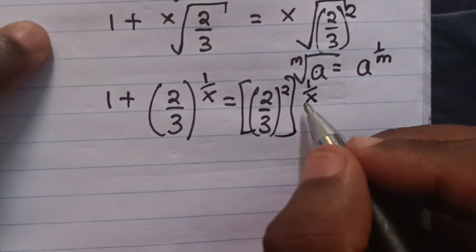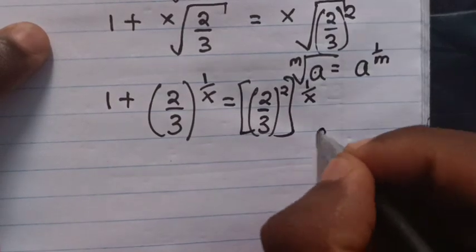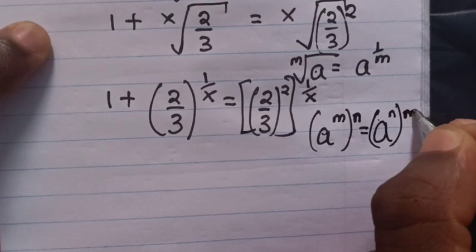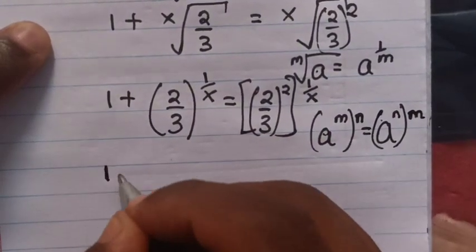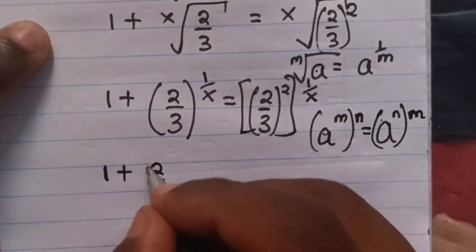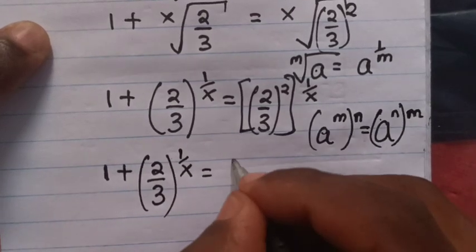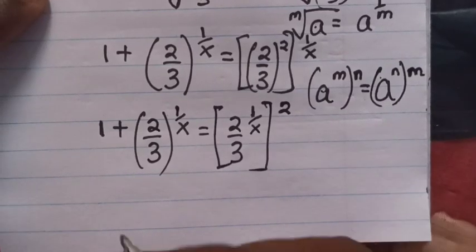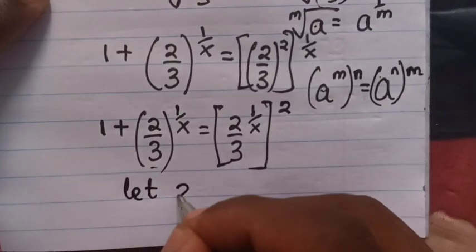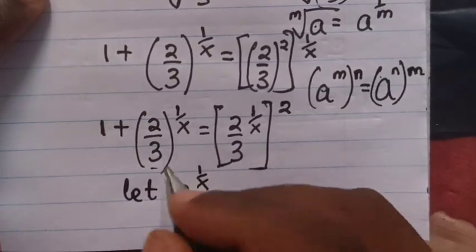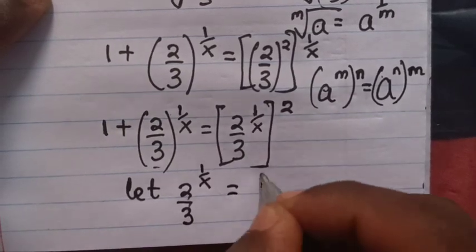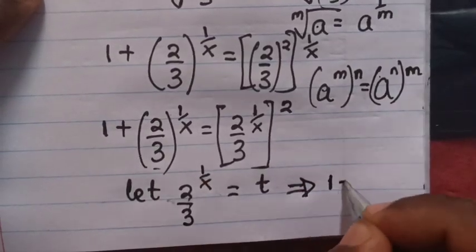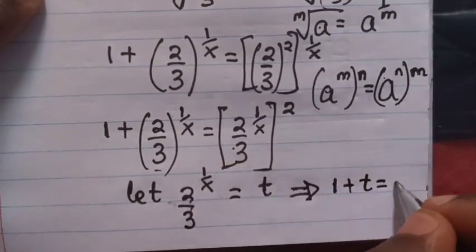From the right side of the equation, we apply the rule that the m-th root of x equals (2/3)^(1/x) to the power of 2. Now, we let (2/3)^(1/x) equal to t. So our equation will be 1 plus t equals t squared.